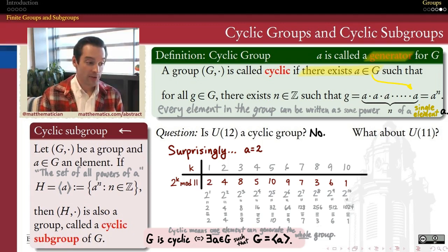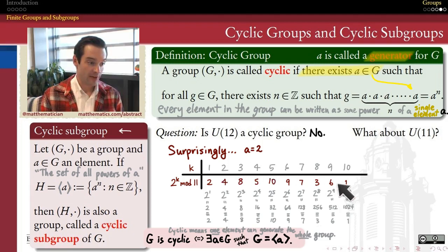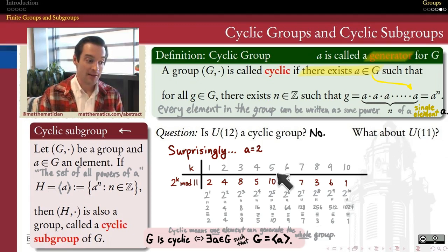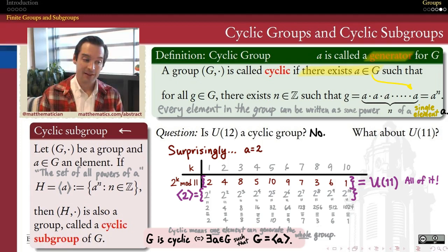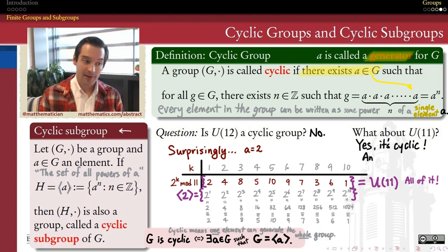The set of all powers of 2 accounts for every element of U11: 1, 2, 3, 4, 5, 6, 7, 8, 9, and 10 — every residue mod 11 that has a multiplicative inverse, meaning every element of this group, is a power of 2. Therefore, U11 is a cyclic group, and one of its generators is 2. An interesting question is whether other elements like 4, 9, or 7 would also generate the entire group — I'll leave that for you to explore.